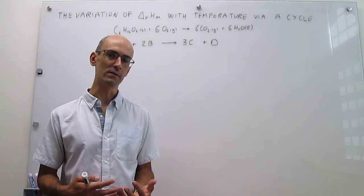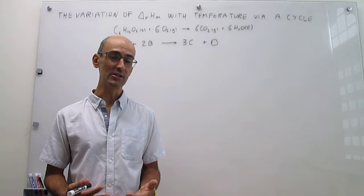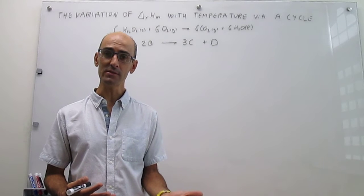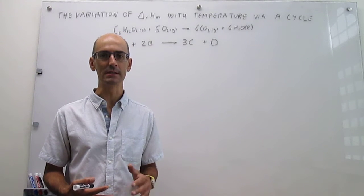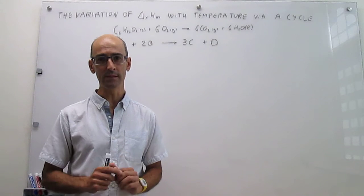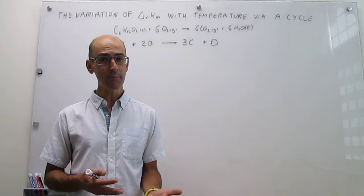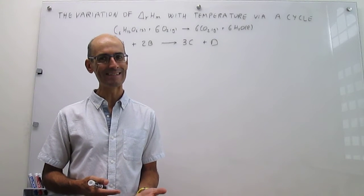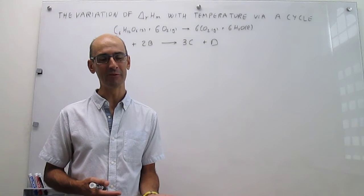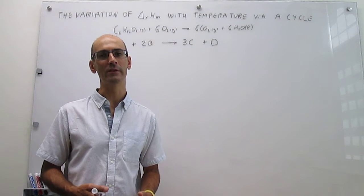A limitation of either one of those methods is that they require data. Generally, the data is all provided under standard conditions, which means one mole of pressure and pure substances, and 298 Kelvin. So you go to all the tables for standard data, and generally those are at 298 Kelvin. There's a problem: if you want to calculate the enthalpy of a reaction at a different temperature from 298 Kelvin, you're out of luck, because the data is only good for 298 Kelvin.